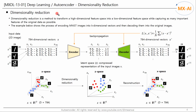Next, let's look at dimensionality reduction. Dimensionality reduction is a method to transform a high-dimensional feature space into a low-dimensional feature space while capturing as many important features of the original data as possible. The example below shows the process of encoding MNIST images into k-dimensional vectors and then decoding them into the original images. We construct an autoencoder with an encoder and a decoder. The encoder and decoder can be composed of fully connected networks, CNNs, LSTMs, etc.